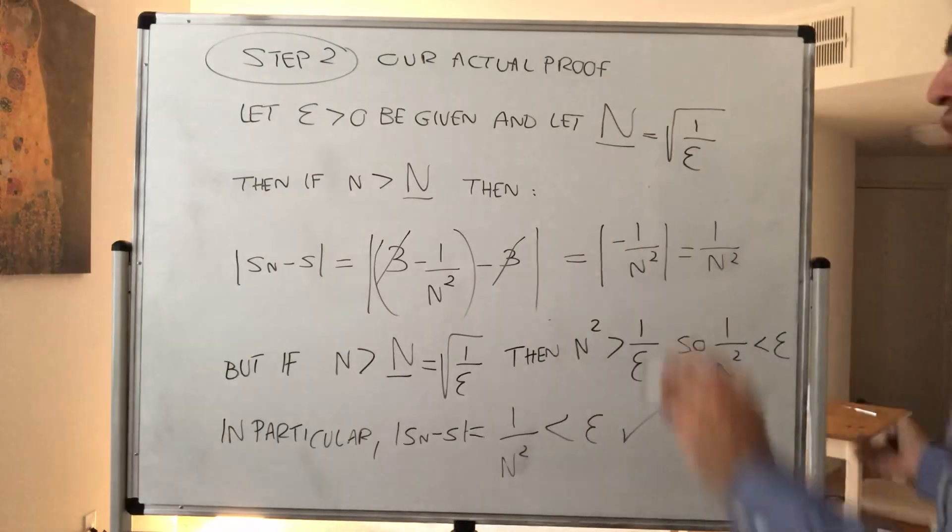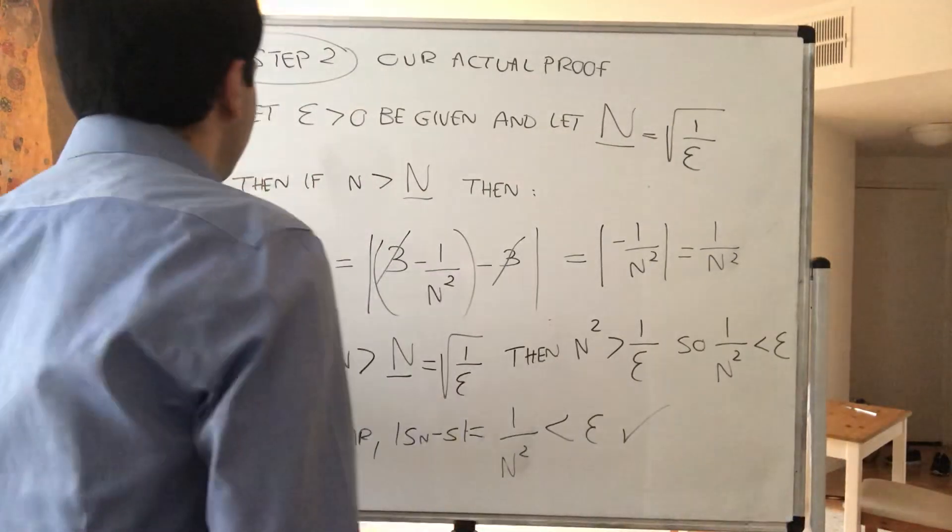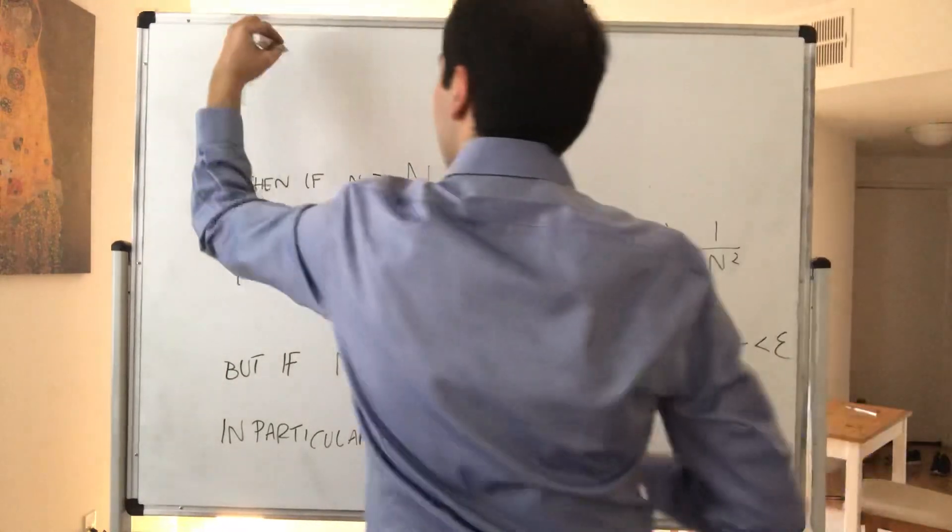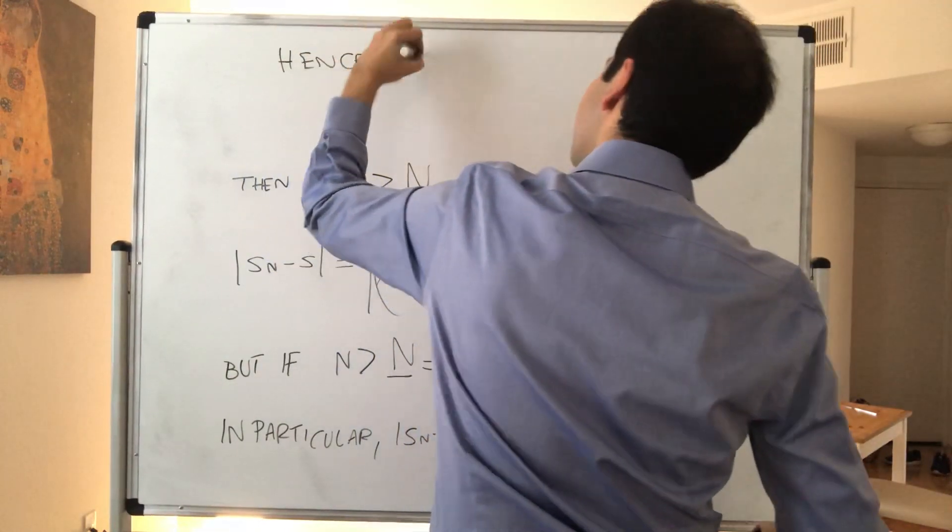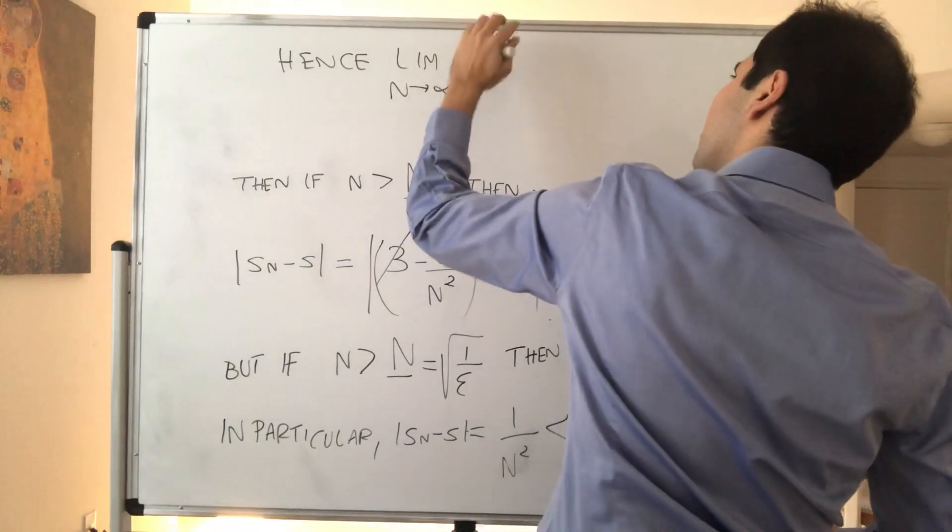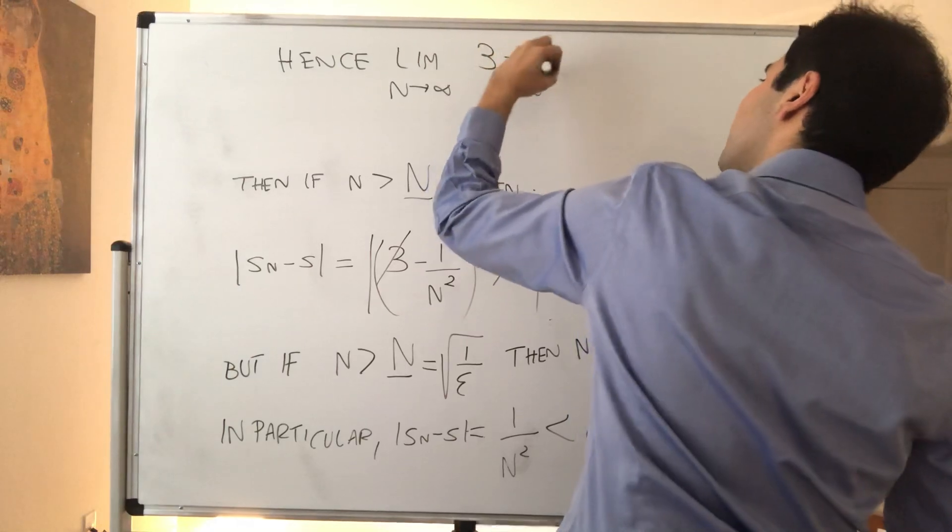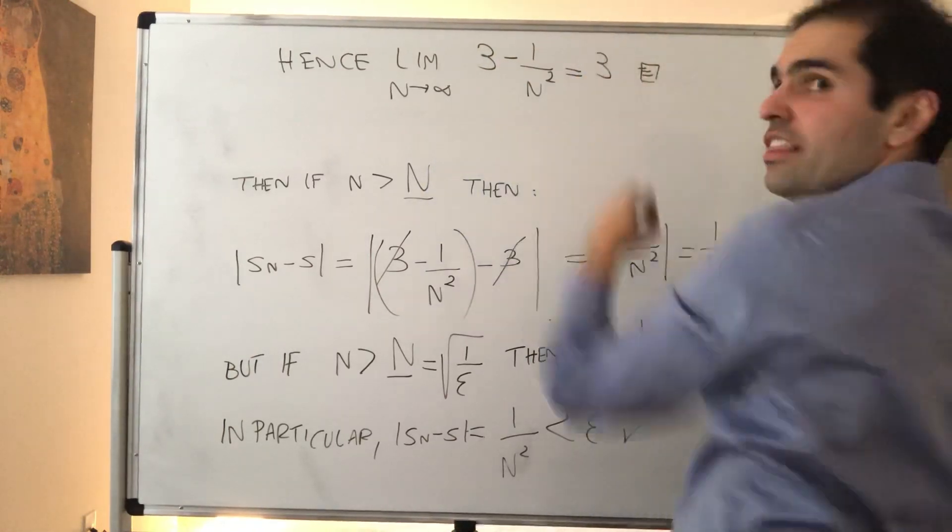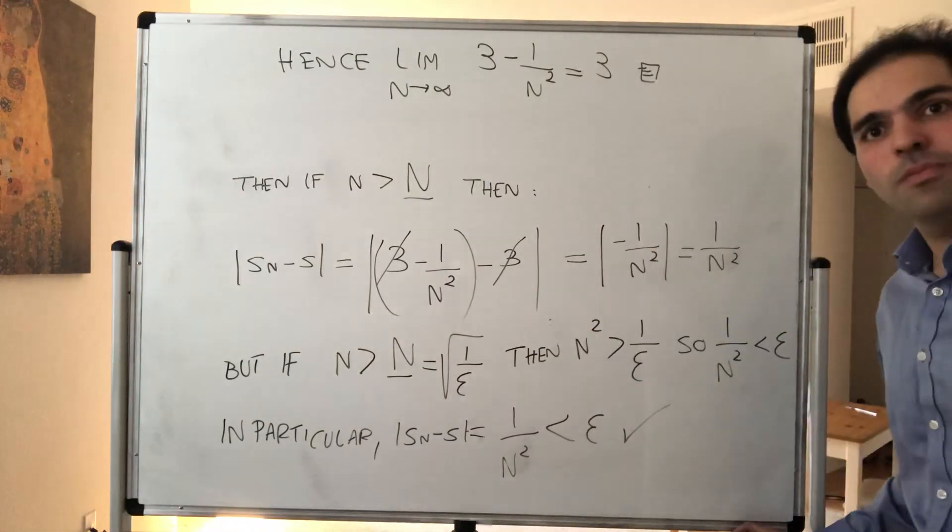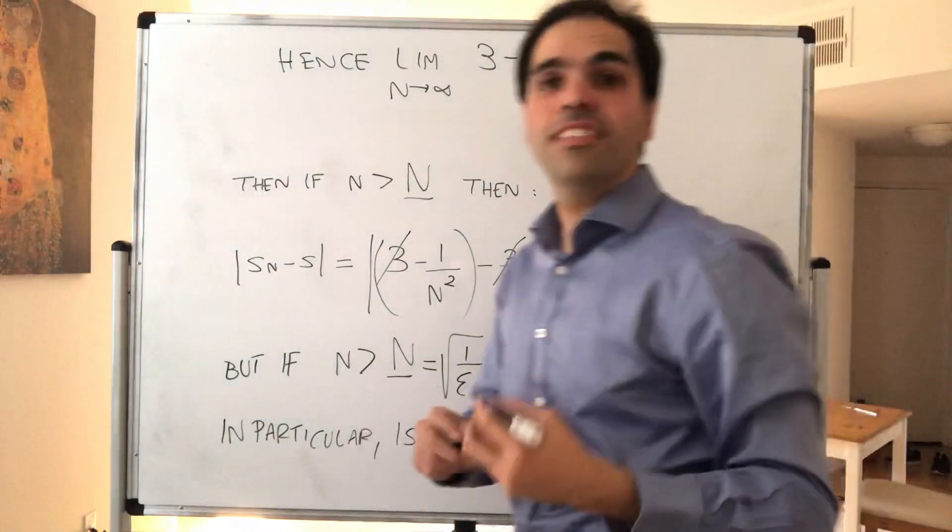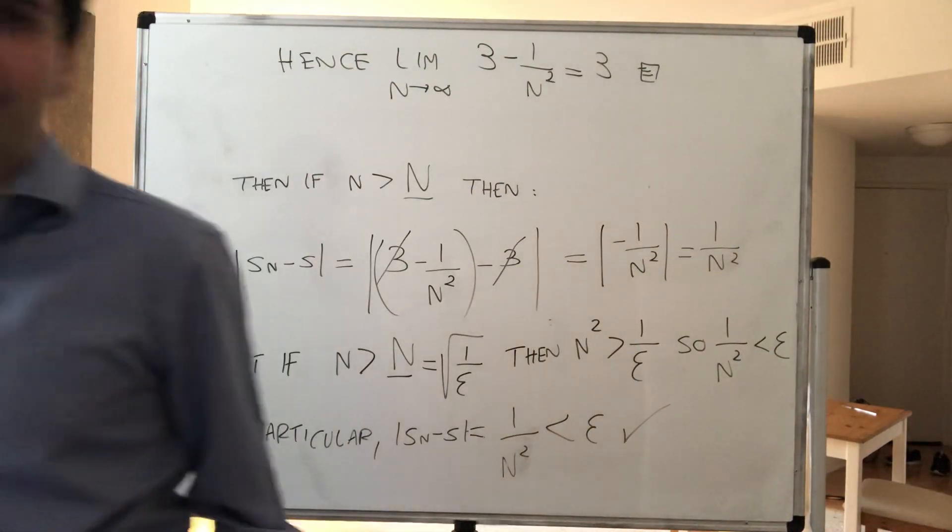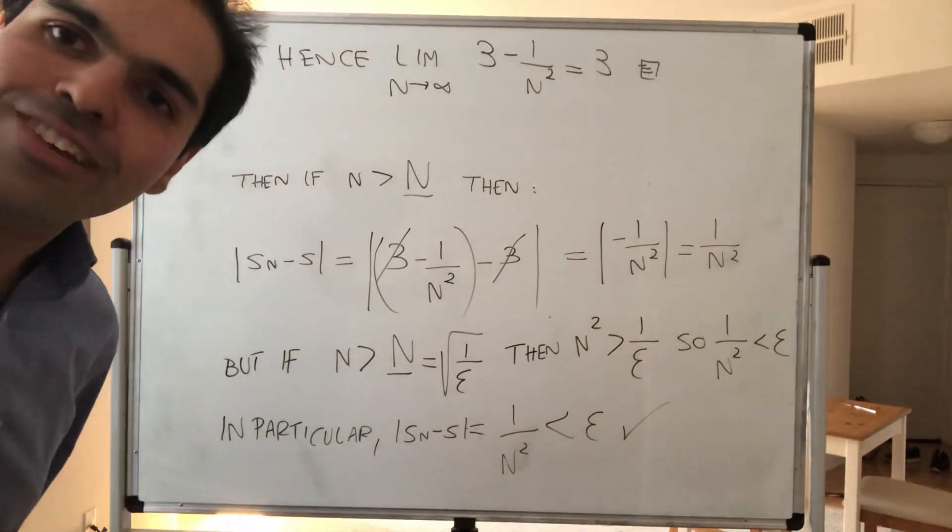So then, therefore, hence, we can just conclude that the limit as N goes to infinity of 3 minus 1 over N squared is actually 3. And then you're done. And again, it seems that it's redundant, but the point is in step one, all the steps are not always reversible. But in this case, you show that it doesn't matter. It still works. All right, thank you very much.